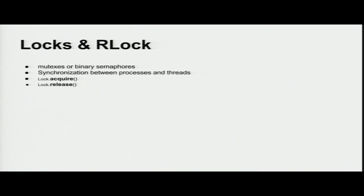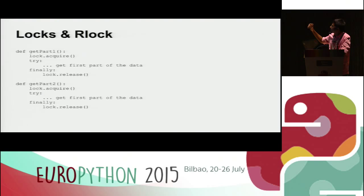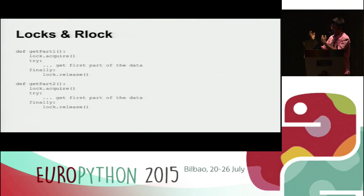There are Lock and RLock (reentrant lock). Locks and RLocks allow you to restrict some code so that if one process is executing it, no other process can execute it in parallel. You can acquire and release the lock whenever you want. The code that runs between lock.acquire() and lock.release() will run exclusively. RLock can be used in recursion — whenever you are doing recursion you should use RLock. Locks are for normal code.